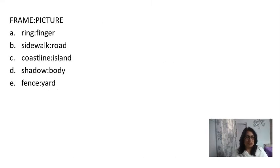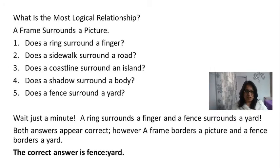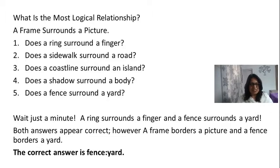Let's have another one. Frame is to picture. So we have the options: ring is to finger, sidewalk is to road, coastline is to island, shadow is to body, and fence is to yard. Now let's have a look at the logical relationship between them. So the frame surrounds a picture. Does a ring surround a finger? Similarly, does a sidewalk surround a road? Does a coastline surround an island? Does a shadow surround a body? And does a fence surround a yard?